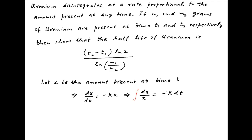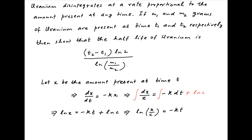Separating the variables, we can write dx/x is equal to minus k dt. Integrating both sides and introducing a constant of integration, say ln c on the right hand side, the equation becomes ln x is equal to minus kt plus ln c, which can also be written as ln(x/c) is equal to minus kt, and therefore x is equal to c times e raised to the power minus kt. Let's call this equation Result 1.